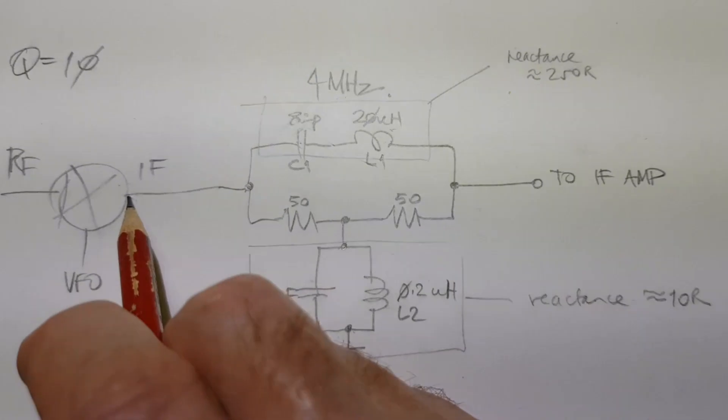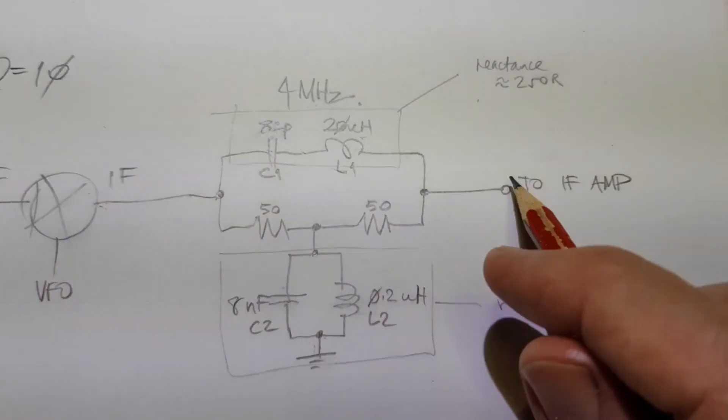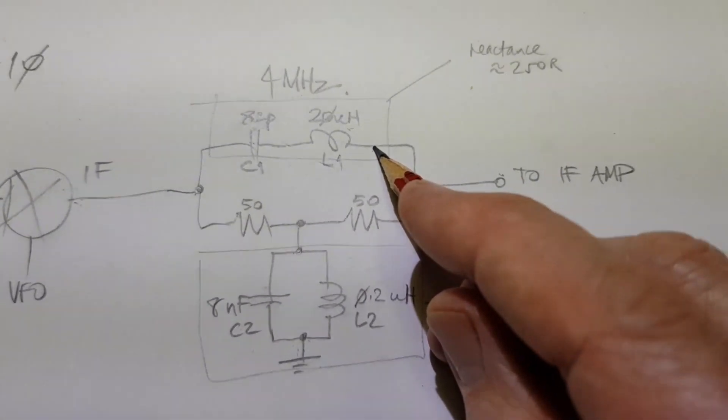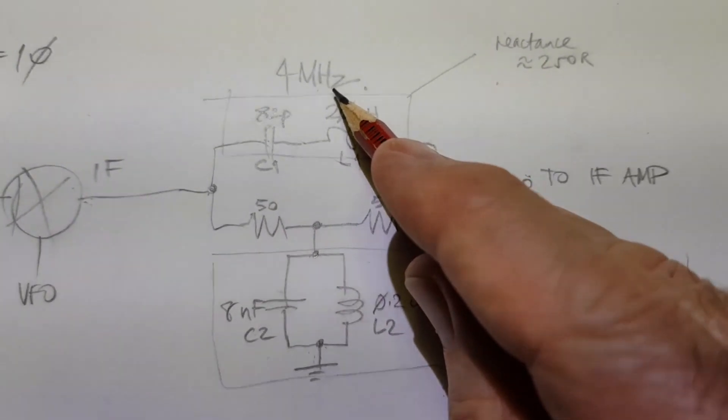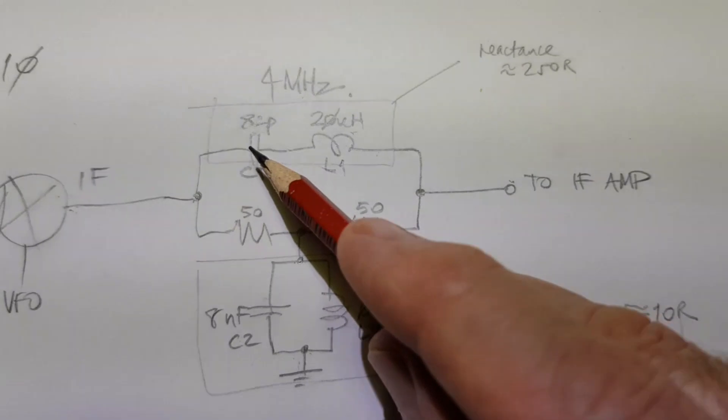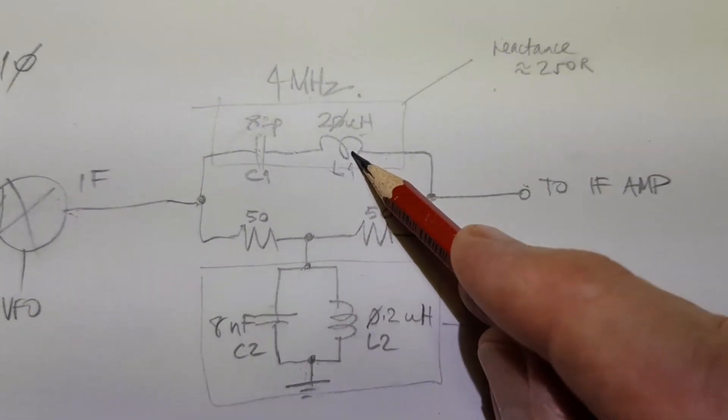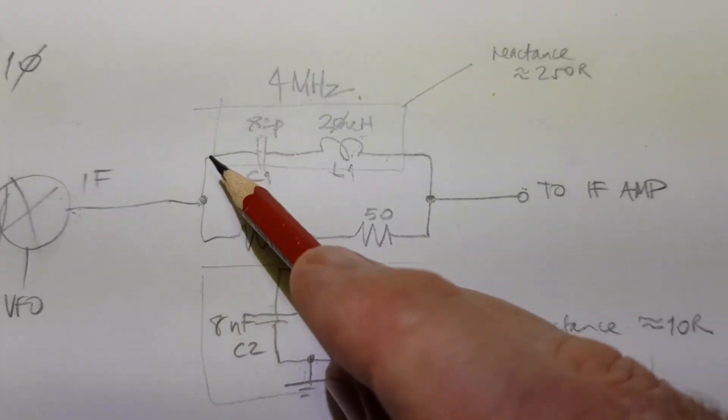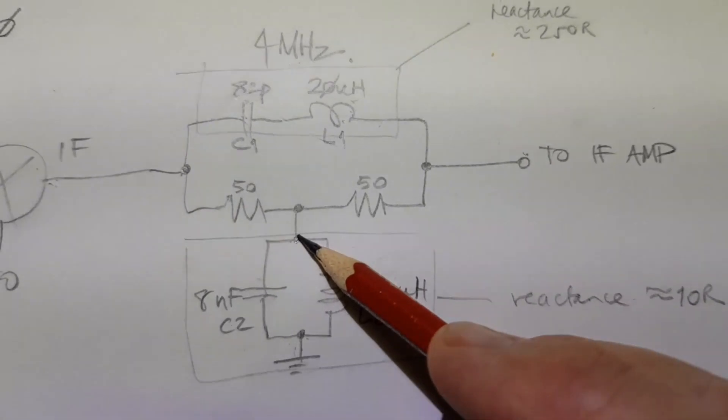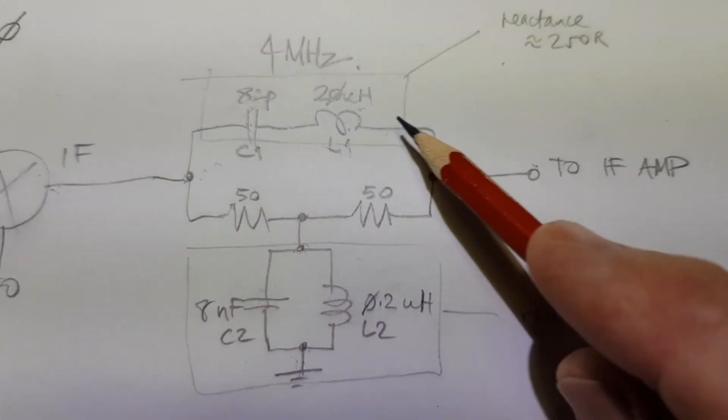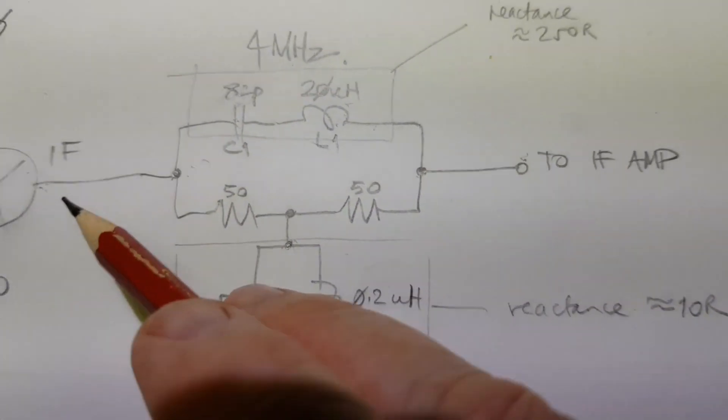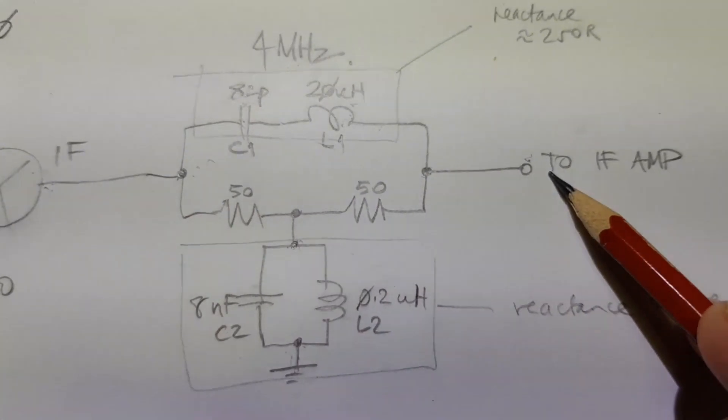Here's the bridged-T diplexer redrawn so it connects to the output or the IF port of a diode ring or double balanced mixer. So how does it work? The series tuned circuit is resonant at the intermediate frequency, so in my case the IF is a slightly unconventional 4 MHz. So at 4 MHz, the series tuned circuit presents a very low impedance to the IF signal, whereas the parallel tuned circuit represents a very high impedance. This tuned circuit here at 4 MHz, at the intermediate frequency, is as good as a short, so there's a very low impedance path from the output of the mixer through to the input of the first IF amplifier.